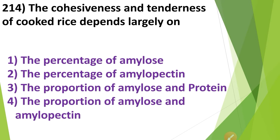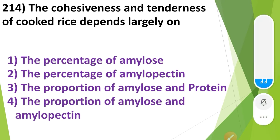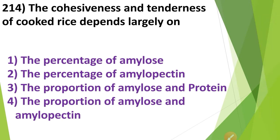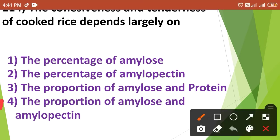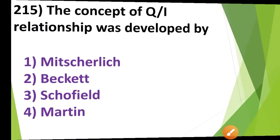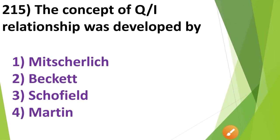The cohesiveness and tenderness of cooked rice depends largely on: 1. The percentage of amylose, 2. The percentage of amylopectin, 3. The proportion of amylose and protein, 4. The proportion of amylose and amylopectin. The correct answer is Option No. 4 — the proportion of amylose and amylopectin.